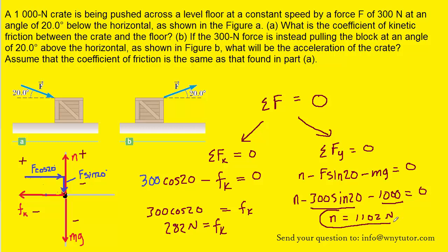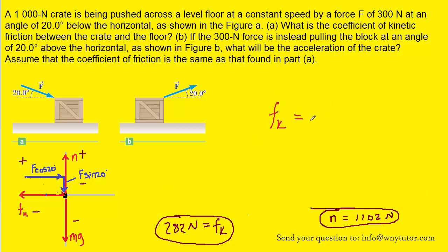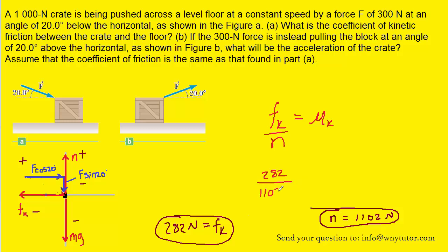It turns out we can find the coefficient of kinetic friction using the normal force and the kinetic frictional force. We know that Fk equals mu k multiplied by N. If we divide both sides by the normal force, mu k is simply Fk divided by N, and we have both of those values. Filling in 282 newtons for Fk and 1,102 newtons for N, mu k turns out to equal approximately 0.256. It is a unitless quantity because the newtons in the numerator and denominator cancel. That is our answer for part A.